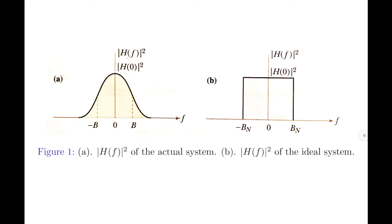Figure 1 shows the magnitude squared of H(f) of the actual practical filter, and Figure b shows the magnitude squared of H(f) of the ideal filter. Please note, in the practical filter shown in Figure a, the bandwidth is given by B, whereas in Figure b, the bandwidth is given by Bn.